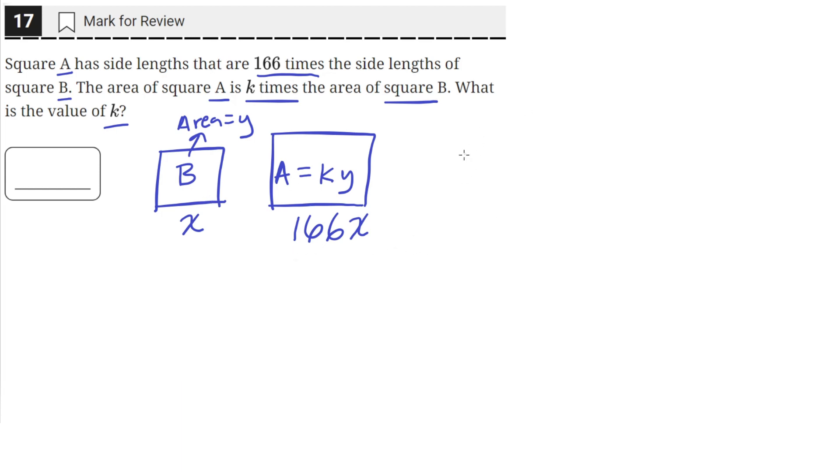So we know that the area of square B is just going to be x squared. So that's going to be y. And we know that the area of square A is just going to be 166x squared.